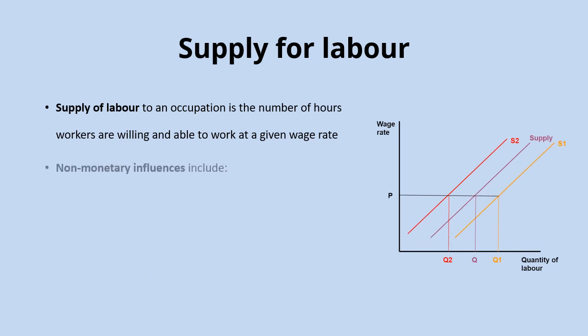There are also non-monetary influences that might cause the supply curve for labour to shift right or left. These might include the amount of training needed for that particular industry — the more training required or the longer it takes, the more it will limit the supply of labour and push that curve further to the left. The immobility of labour is a similar point: if labour is more immobile, either occupationally — where it's more difficult to move between professions — or geographically, that will limit the supply of labour and push that curve further to the left.